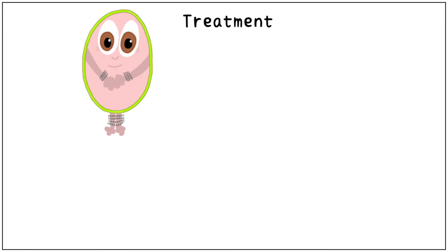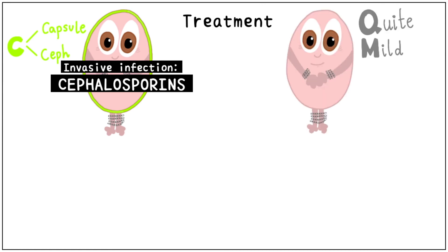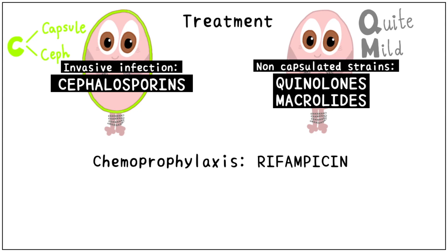For the treatment of invasive infections, we use cephalosporins — C for capsulated and C for cephalosporin. For the non-capsulated strains, infection is quite mild; remember Q for quinolones and M for macrolides. For chemoprophylaxis in exposed healthcare workers or family members of patients, we can use rifampicin.